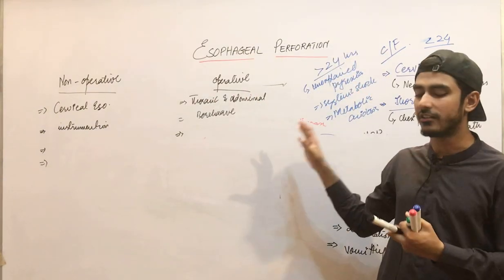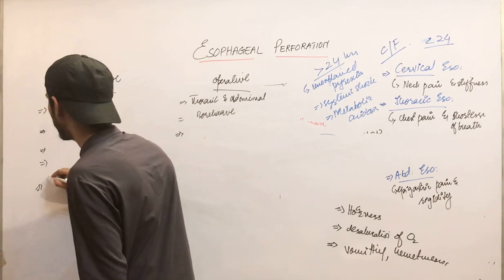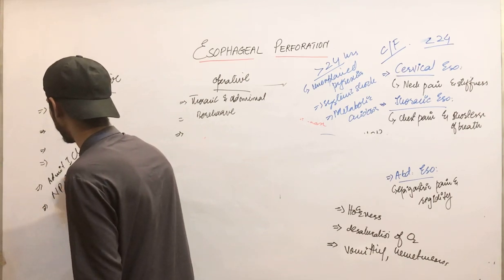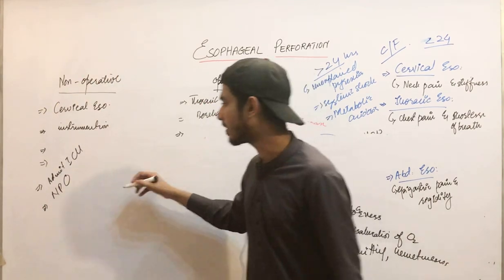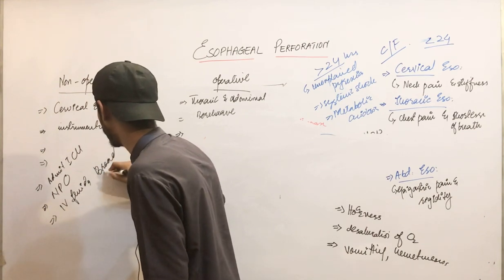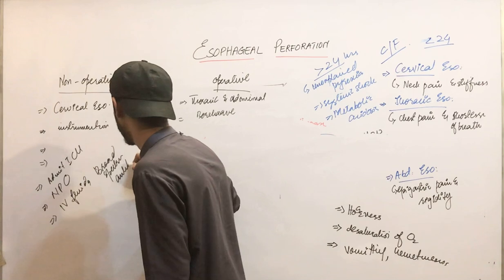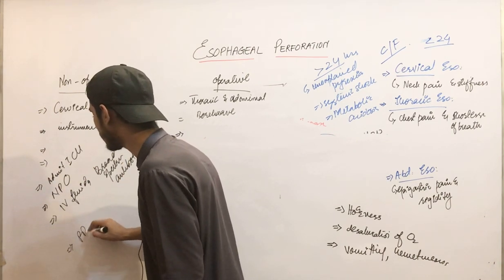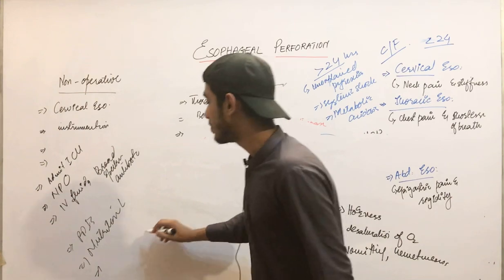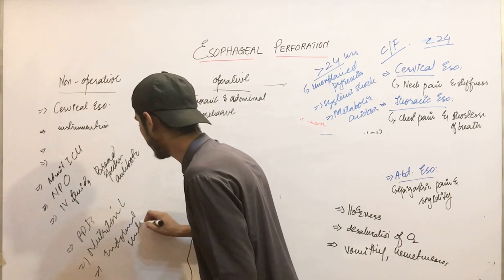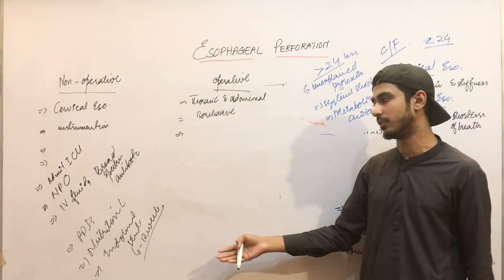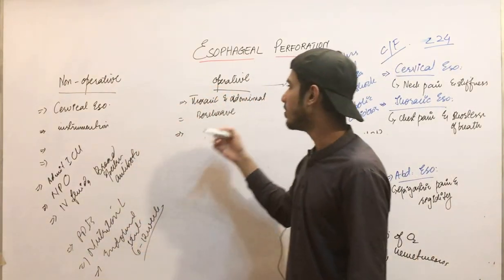Non-operative management involves: admitting the patient to the ICU, keeping the patient nil per oral (NPO), giving IV fluids, giving broad-spectrum antibiotics, giving PPIs, providing nutritional support, and optionally placing a temporary endoluminal stent for about 6 to 12 weeks.